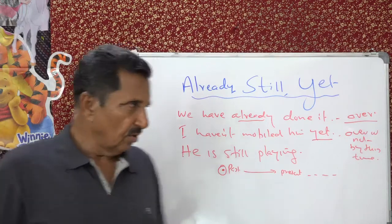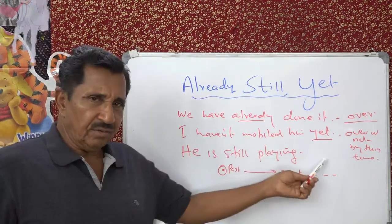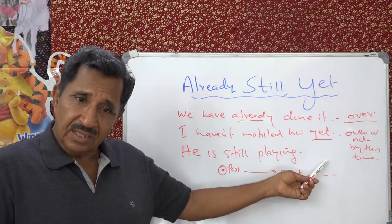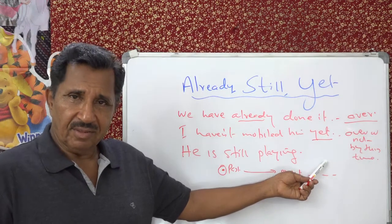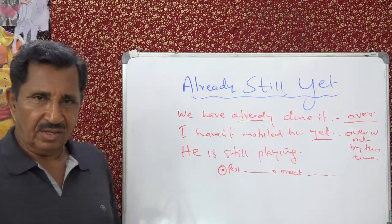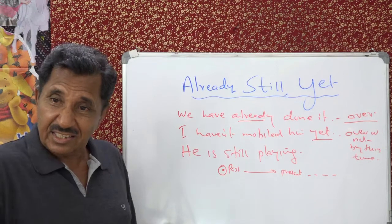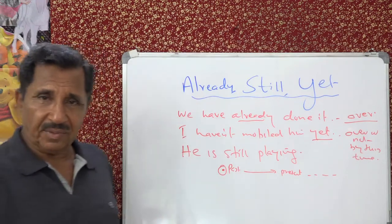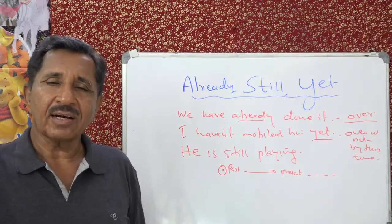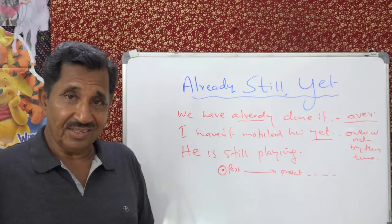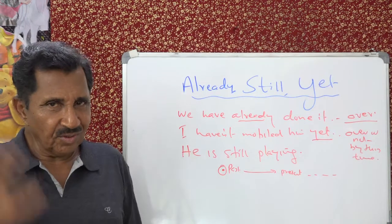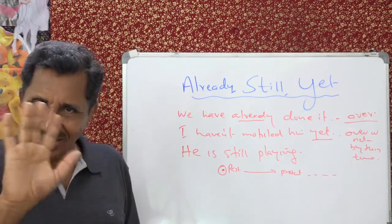I think it is clear. 'Already' — it is over. 'Yet' — not over, you are waiting. He is still crying, he is still complaining — that's 'still,' continuing from the past into the present. I think it is clear. No problem. So take it easy. Have a nice time. Enjoy. Bye!